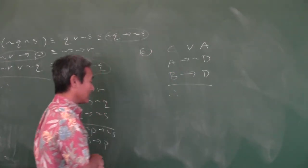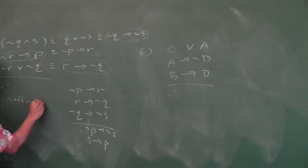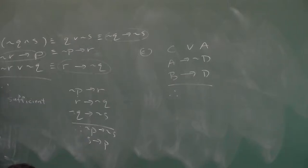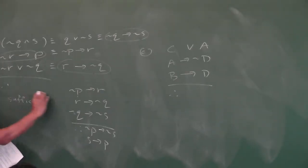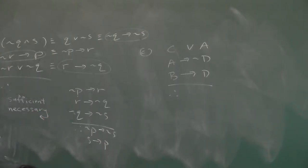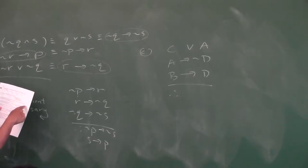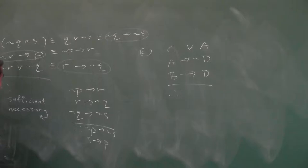Here's the secret I teach the math team. When you have a sufficient condition, see how the F's are pointing that way — this implies that. A is a sufficient condition for NOT D, so A implies NOT D. For necessary conditions, see how the Y is pointing that way — D is a necessary condition for B means B implies D.